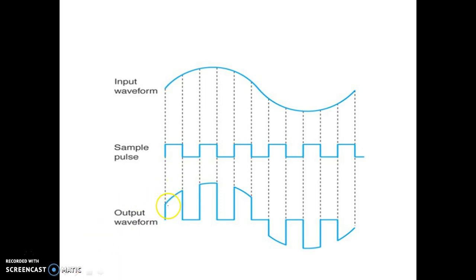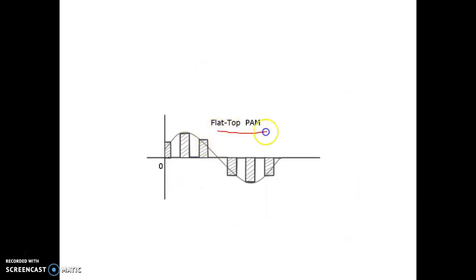Now, what is flat top sampling? From the name itself you can understand that the top of the carrier will be flat in shape instead of following the message signal. This is flat top pulse amplitude modulation, or flat top sampling. The amplitude of the carrier pulse still varies according to the message signal, but the top of the pulse is flat. In natural sampling it was not flat — that is why the name is given as flat top sampling.